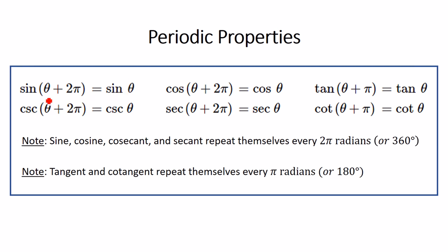That goes for sine, cosine, cosecant, and secant. Tangent we can do a little bit better than that — tangent actually repeats itself every π radians or every 180 degrees. Tangent and cotangent, the two trig functions that are reciprocals of each other, repeat themselves every 180 degrees or every π radians.